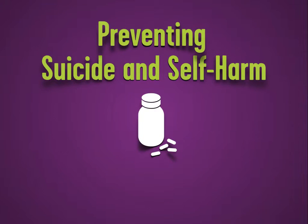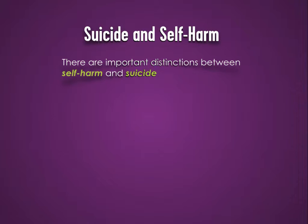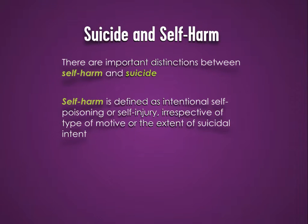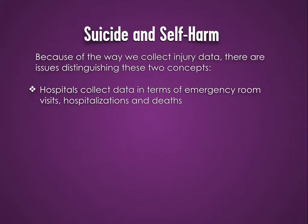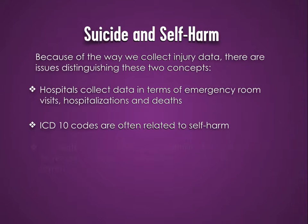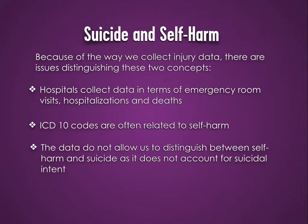Preventing suicide and self-harm. There are important distinctions between self-harm and suicide. Self-harm is defined as intentional self-poisoning or self-injury, irrespective of type of motive or the extent of suicidal intent. Because of the way we collect injury data, there are issues distinguishing these two concepts. Hospitals collect data in terms of emergency room visits, hospitalizations, and deaths. ICD-10 codes are often related to self-harm, and the data do not allow us to distinguish between self-harm and suicide, as they do not account for suicidal intent.